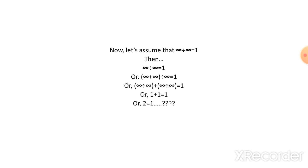So it also gives us 2 = 1, which doesn't make any sense. And in this way, you can also prove that 3 = 1, 4 = 1, etc. So these do not make any sense. So you can say that infinity divided by infinity does not equal one.